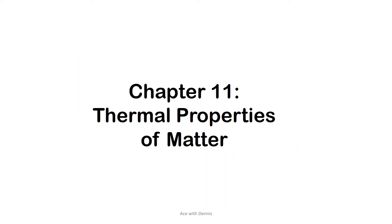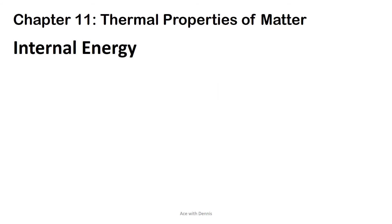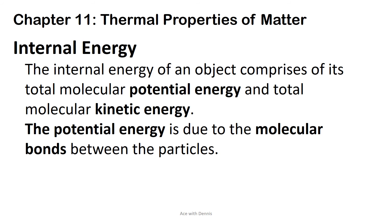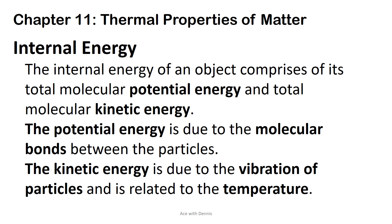Chapter 11: Thermal Properties of Matter. Internal energy. The internal energy of an object comprises its total molecular potential energy and total molecular kinetic energy. The potential energy is due to the molecular bonds between the particles. The kinetic energy is due to the vibration of particles and is related to the temperature.